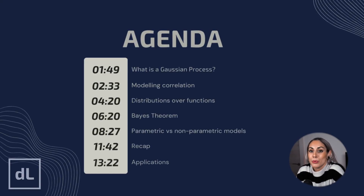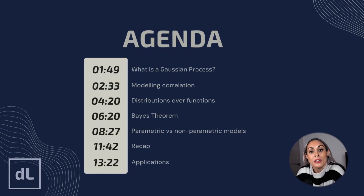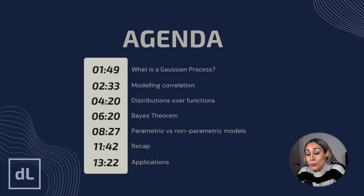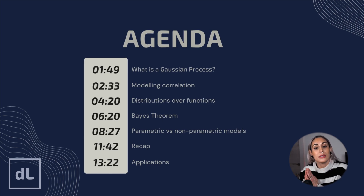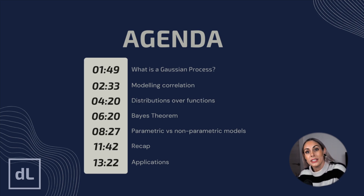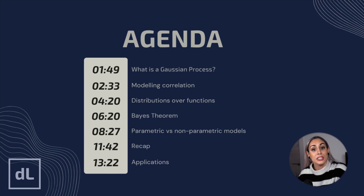In this video, we introduce Gaussian processes — a powerful mathematical framework used in machine learning for both regression and classification problems. Two perspectives on Gaussian processes are explained: the correlation modeling approach and the distributions over functions approach. We'll look into how data collection informs predictions and quantifies uncertainty, and discuss the importance of understanding core principles like Bayes' theorem, which underpins many predictive models.